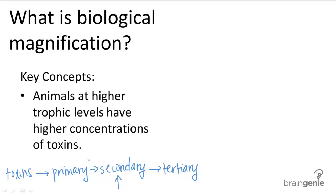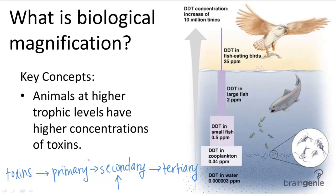Here's a famous example to illustrate the process. DDT is an insecticide that was very popularly used after World War II. When people sprayed DDT onto their lawns and in their gardens, some of it would run off into the water system with the rain. Once in the water, DDT would end up being consumed by the zooplankton. These would be the primary consumers that were eating particles in the water and would inevitably pick up the DDT with their diet.